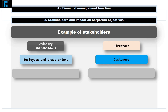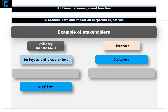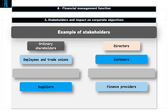Customers want a quality product or service that gives value for money. Suppliers' short-term objectives are to supply the organisation and get paid on time. Their long-term objectives would be to build long-term relationships and get repeat custom. Finance providers' objective is to get the loan they made repaid in full with interest. They are interested in the organisation's ability to generate cash for this repayment in the short and long-term.